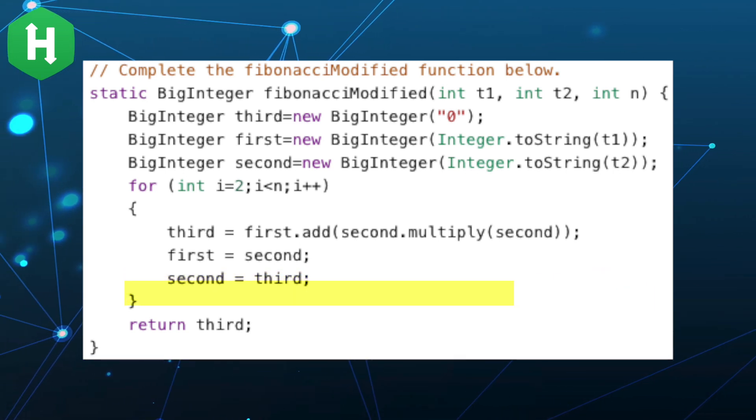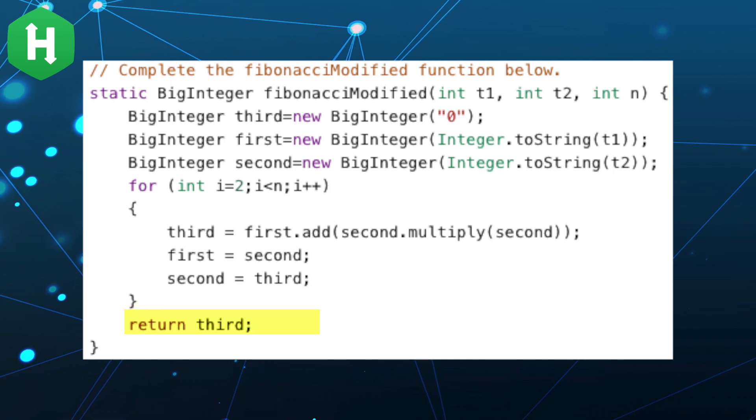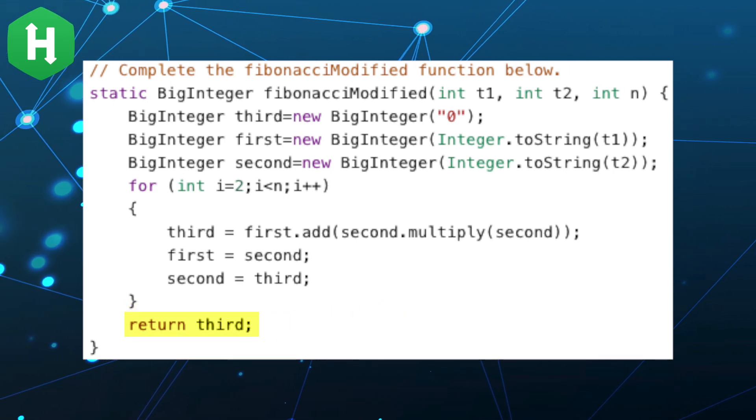When the loop completes, the value of the BigInteger third is equal to the nth term of the sequence and gets returned to the calling method.